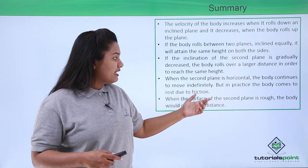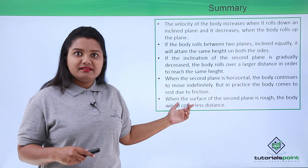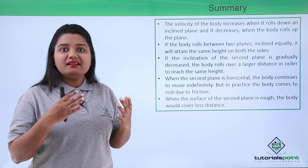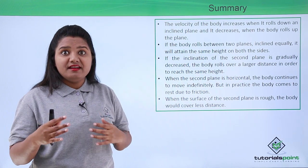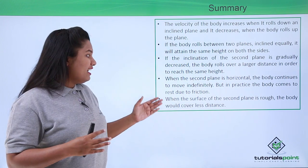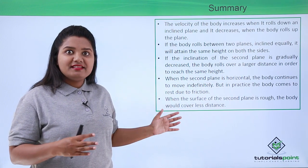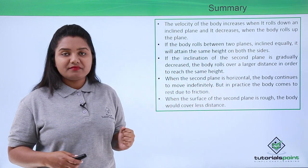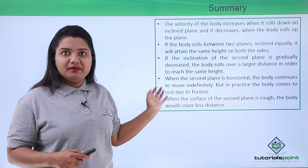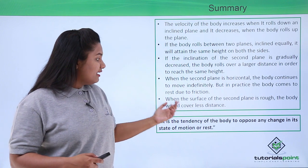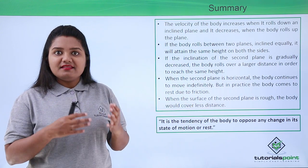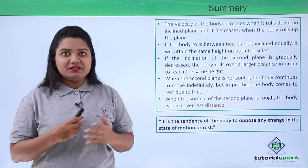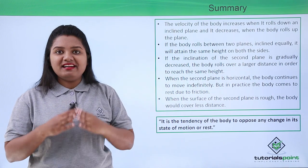When the surface of the second plane is rough, the body covers a lesser distance. When both the surface of the plane and the surface of the body are rough, the frictional force is greater, causing the body to roll an even lesser distance compared to when the surfaces are smooth. From this experiment, Galileo concluded that it is the tendency of a body to oppose any change in its state of rest or motion — and with this we have reached the end of the video.